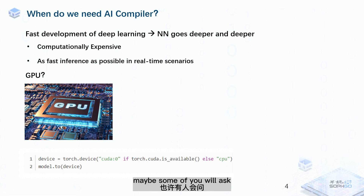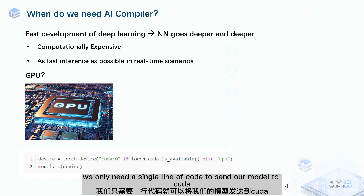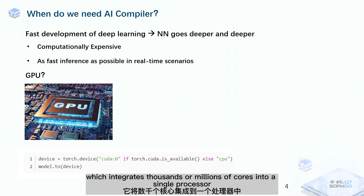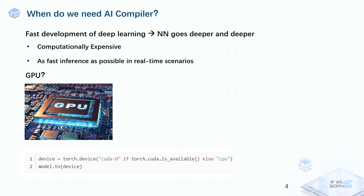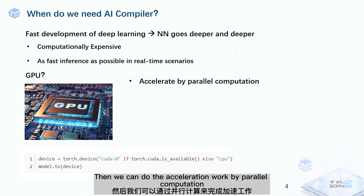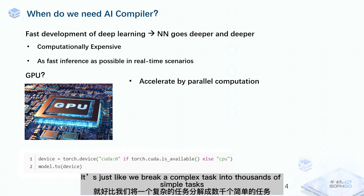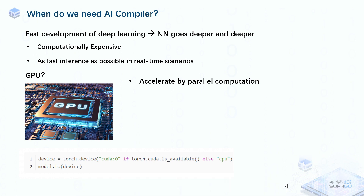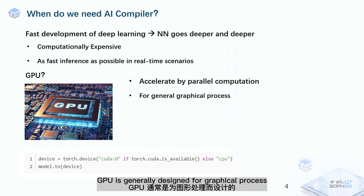At this point, maybe some of you will ask: why don't you just use GPU? In some deep learning frameworks we only need a single line of code to send our model to CUDA, then we can accelerate it by GPU. Of course GPU can be one of the choices, which integrates thousands or millions of cores into a single processor. Then we can do the acceleration work by parallel computation — it's just like breaking a complete task into thousands of simple tasks and doing all of them at the same time.